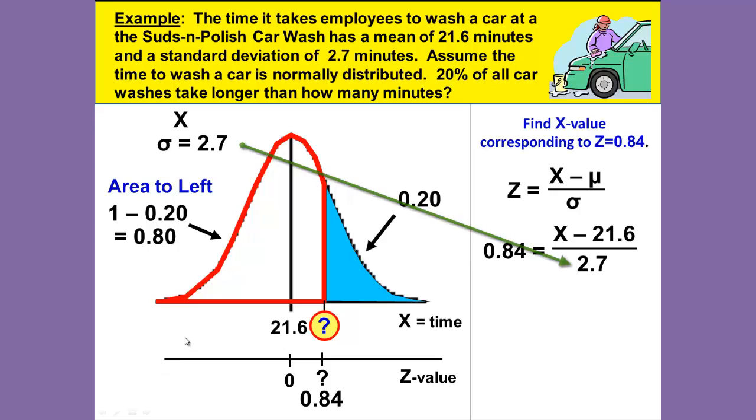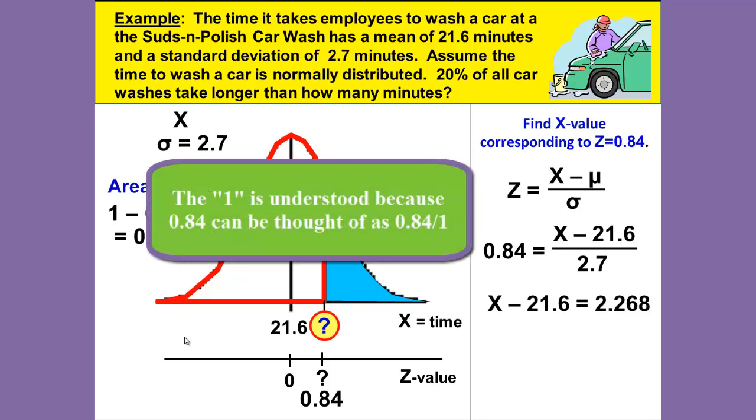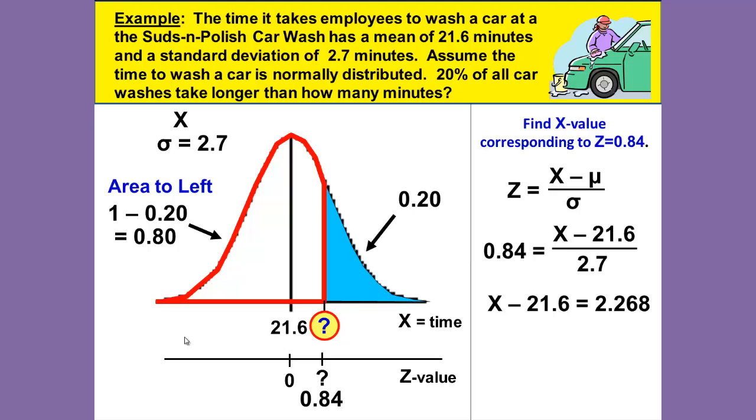We will use cross multiplication to solve this. That means we will multiply 0.84 times 2.7 and x minus 21.6 times 1. One times x minus 21.6 gives us x minus 21.6, and 0.84 times 2.7 gives us 2.268. To finish solving for x, we will add 21.6 to both sides of the equation, and that gives us x equals 23.868.